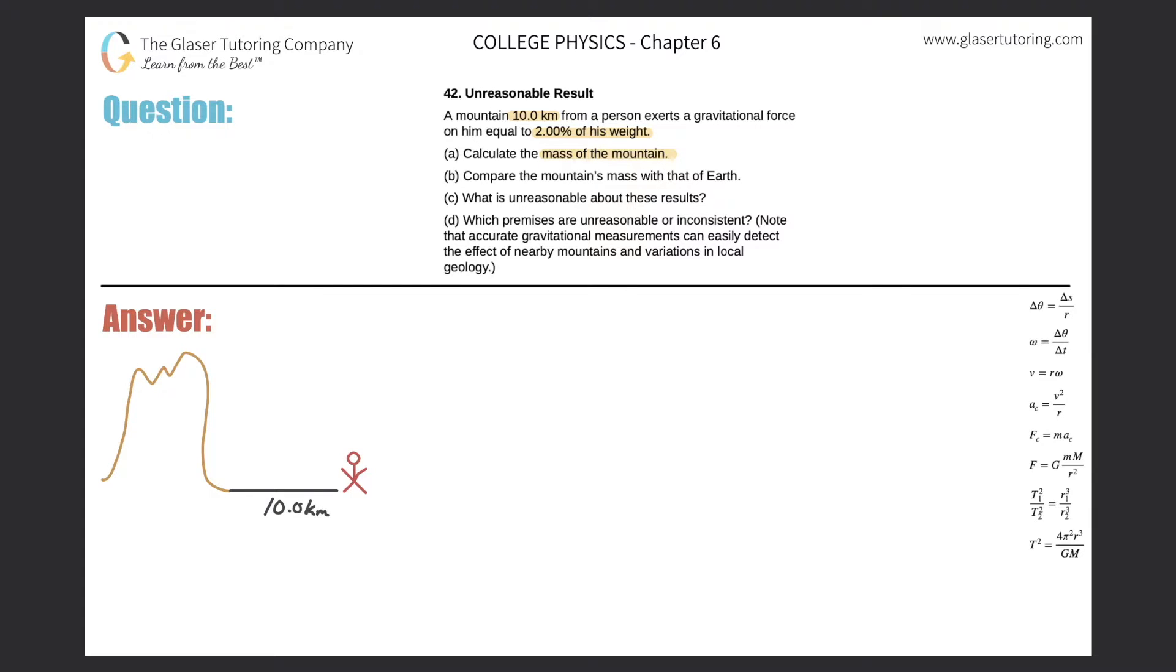We're looking to try to find the mass of the mountain. And they also tell us that the mountain exerts a gravitational force on the person equal to 2% of his weight. All right, so what does that look like mathematically? Well, they said that the gravitational force is going to equal 2%. So remember, 2% in terms of a decimal, 2.00%. Remember, you move the decimal two places to the left to convert it into the decimal. So this would be the associated decimal.